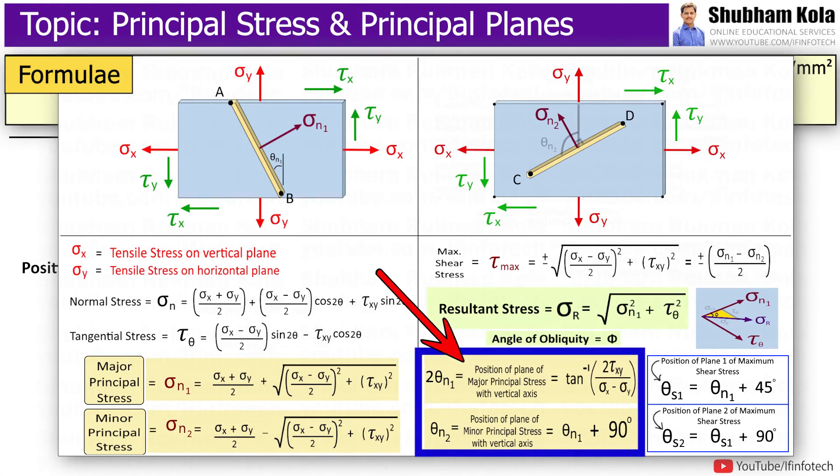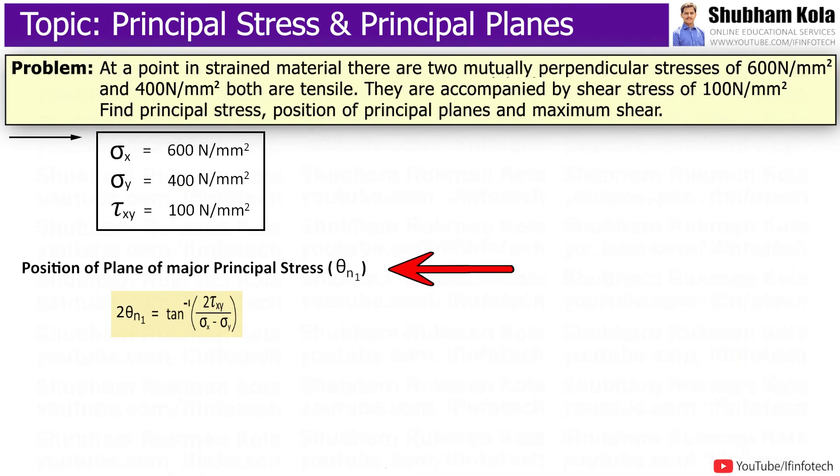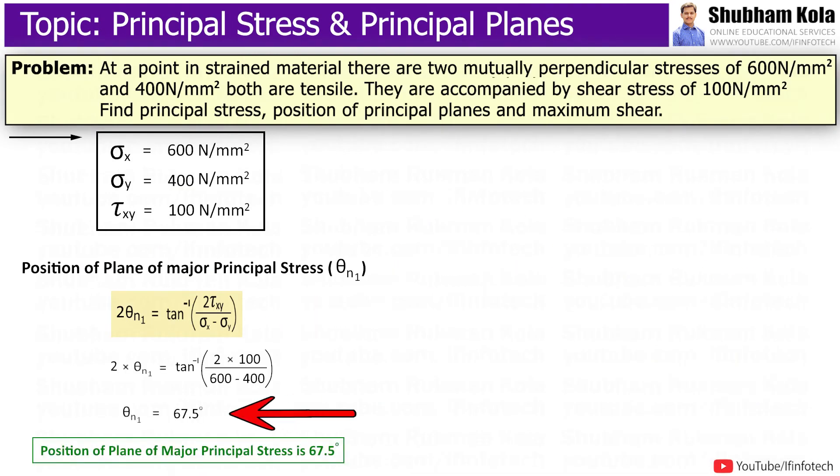Now, to calculate positions of plane of major principal stress, that is theta_n1, I will use this formula. And I will calculate theta_n1 as 67.5 degrees.